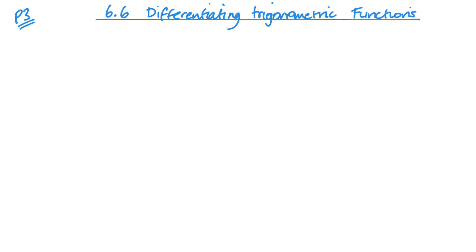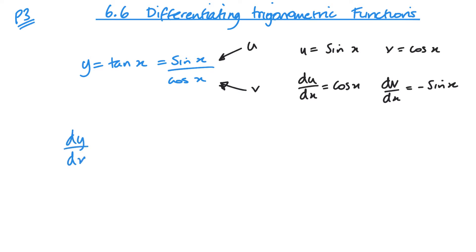So let's start with differentiating tan x. If I think about tan x, well tan x is simply sine x over cos x. And if I think back to the quotient rule, then u equals sine x and v will equal cos x. So once I differentiate u and v, I can then substitute it into the quotient rule.